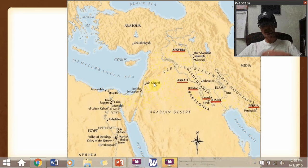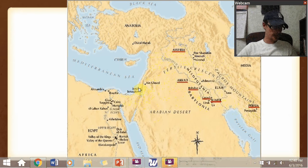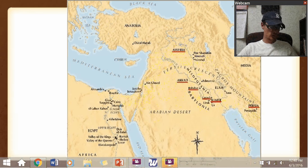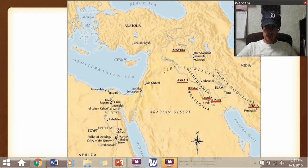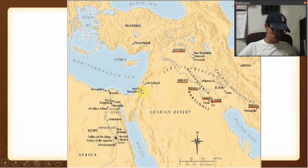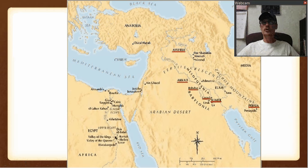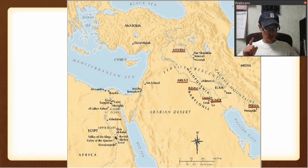The prophets — a good majority of them — have to do with either Israel or Judah. The prophets sent to Israel are Amos and Hosea. The prophets sent to Judah: Isaiah, Micah, Habakkuk, Zephaniah, Jeremiah, Daniel, Ezekiel, Haggai, Zechariah, Joel, and Malachi. And the prophets sent to foreign nations — somewhere besides Israel or Judah — are Jonah, Nahum, and Obadiah. Jonah and Nahum were both sent to Assyria. Obadiah was sent to Edom.